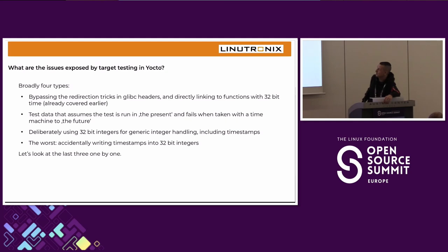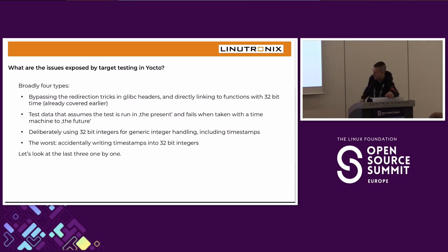What are the issues that this testing can expose? Four types: First, bypassing glibc header redirection tricks by linking directly with 32-bit symbols — already covered. Second, test data that makes assumptions about the system date, breaking when you set the date to the future. Third, components that deliberately use 32 bits for integers. Fourth, and most dangerous, accidental truncation of bits when you take a `time_t` which is 64-bit and assign it to a C integer type that has fewer bits.